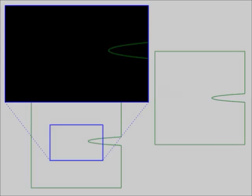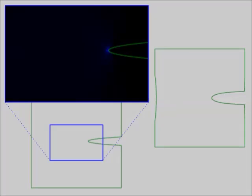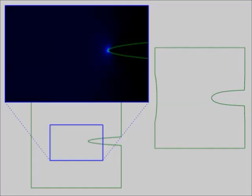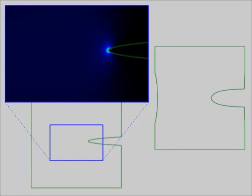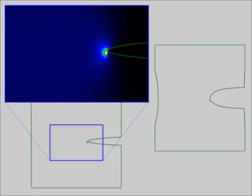To understand the level set evolution, we zoomed in on the tip of the notch from the previous example. The colors represent the elastic energy density associated with the current displacement, defined on the underformed reference configuration.